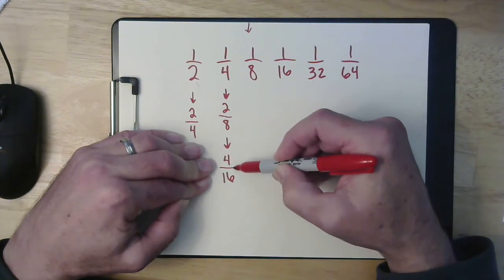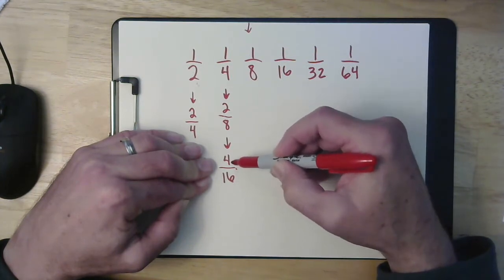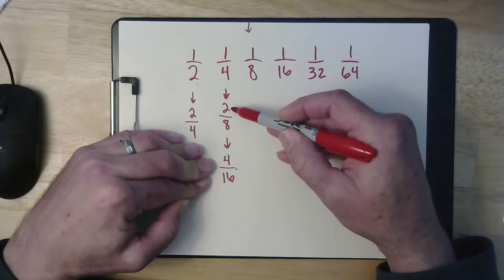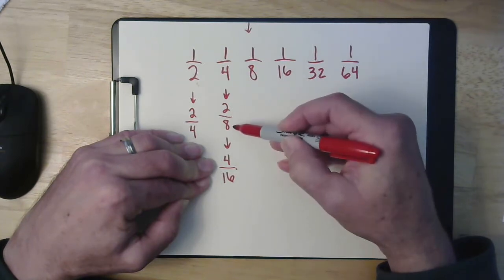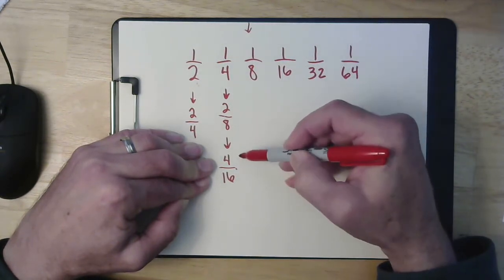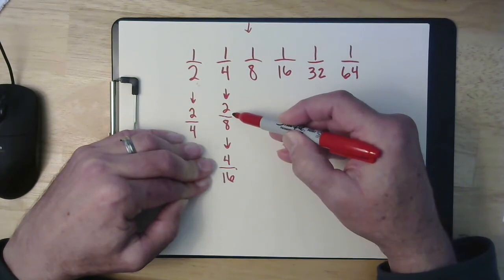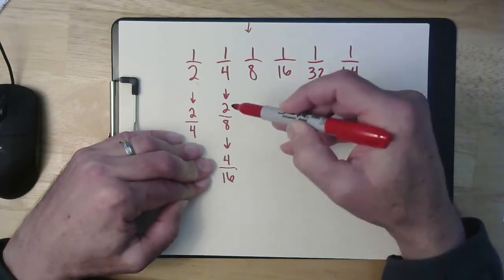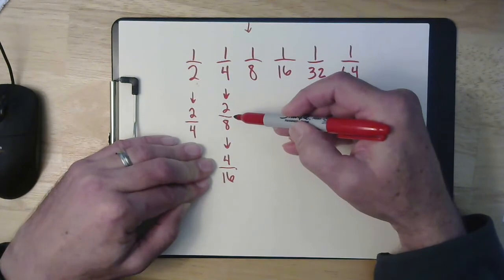So I can take my four sixteenths, I can cut both of those in half. So half of four is two, half of sixteen is eight. So I know four sixteenths is the same as two eighths. But look at that, those are both still even. That means I can go down one more step.